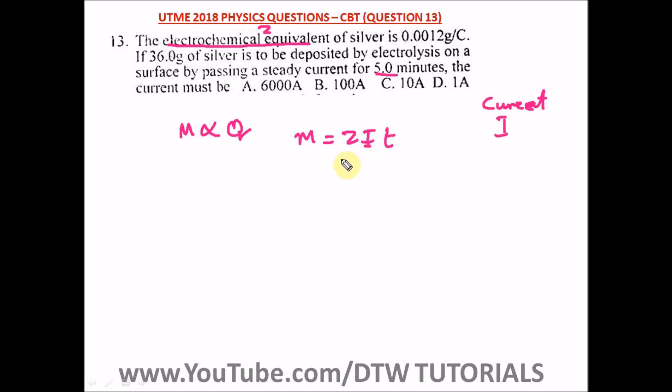Making I the subject of formula, we divide both sides by zt. So I equals m over zt. It's always important that you know the change of subject of formula.